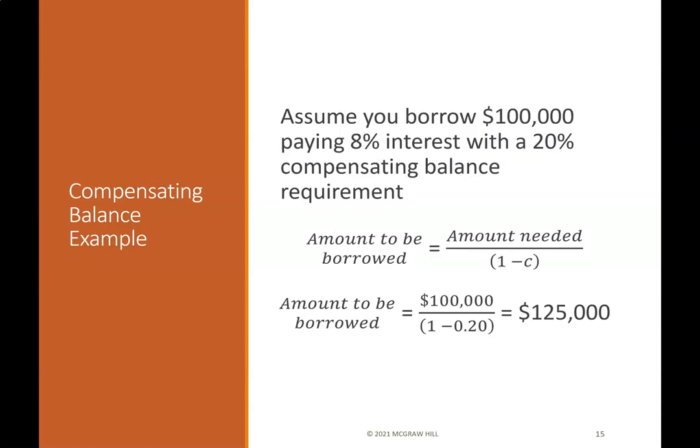Compensating balance example: Assume you borrow $100,000 paying 8% interest with a 20% compensating balance requirement. Amount to be borrowed equals amount needed divided by (1 minus C), which equals $100,000 divided by (1 minus 0.2), which equals $125,000.